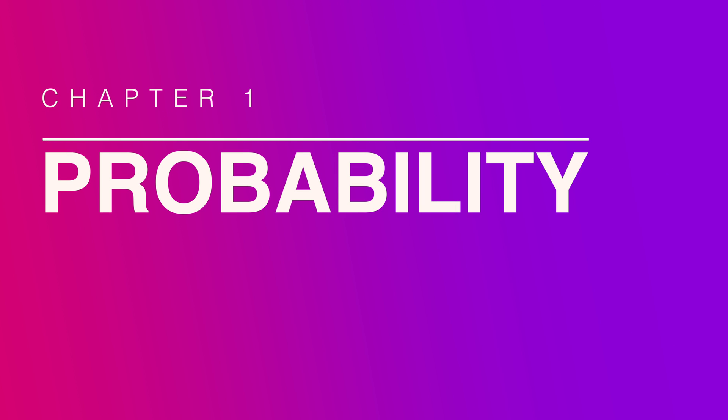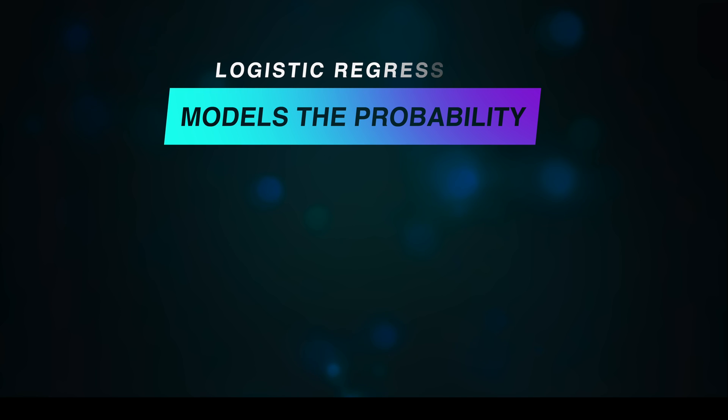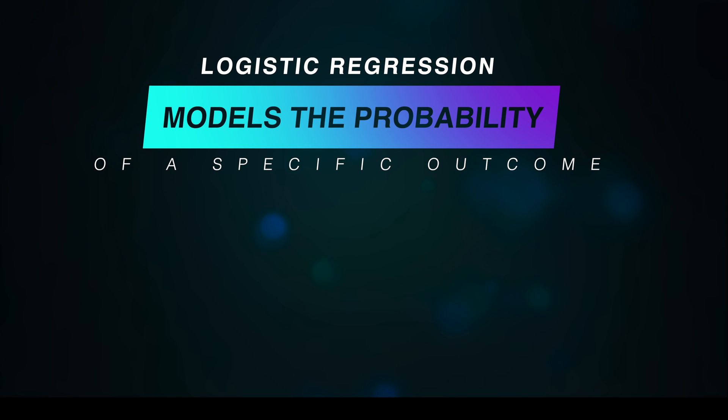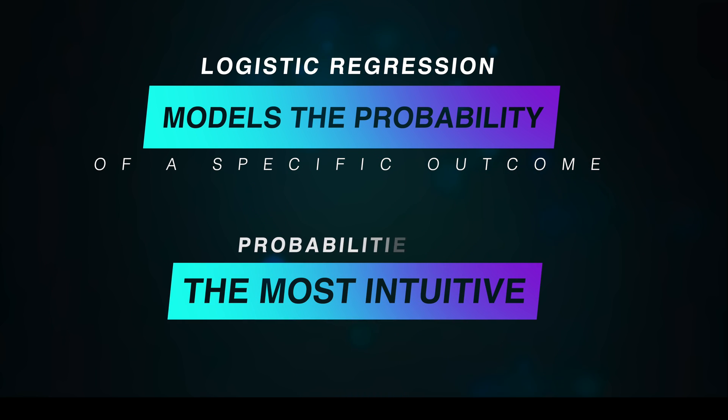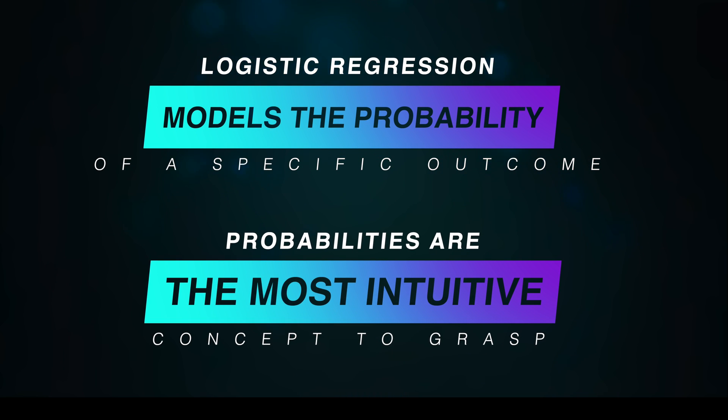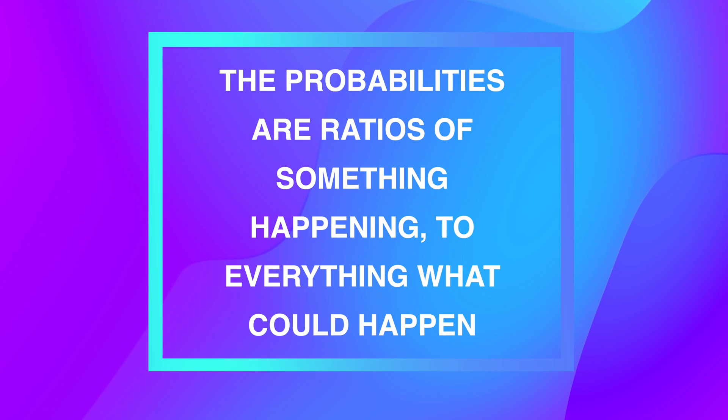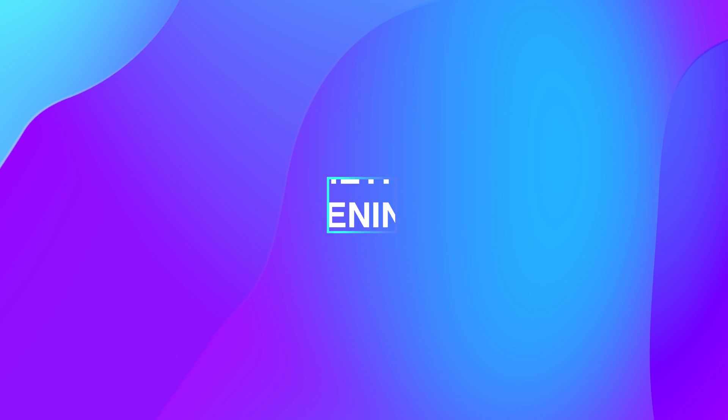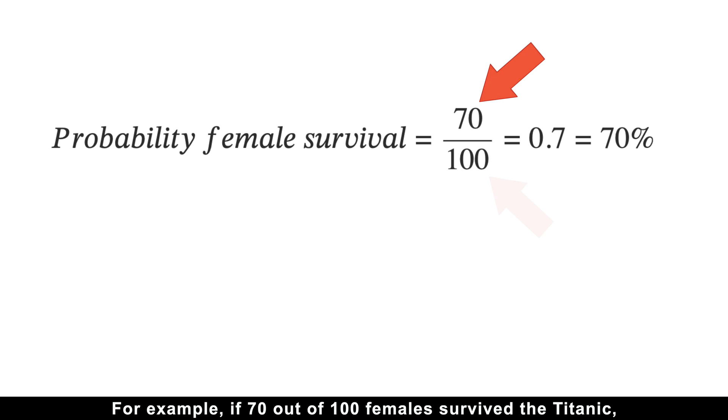We are starting our journey with probabilities for two reasons. First, logistic regression models the probability of a specific outcome. And second, probabilities are the most intuitive concept to grasp. In simpler terms, probabilities are ratios of something happening to everything that could happen.